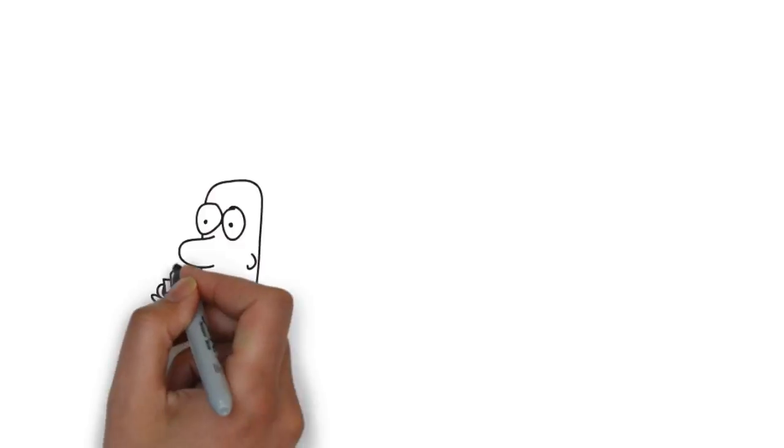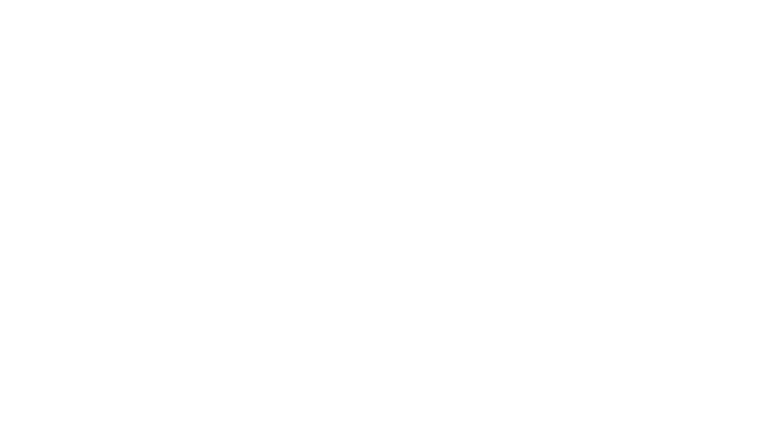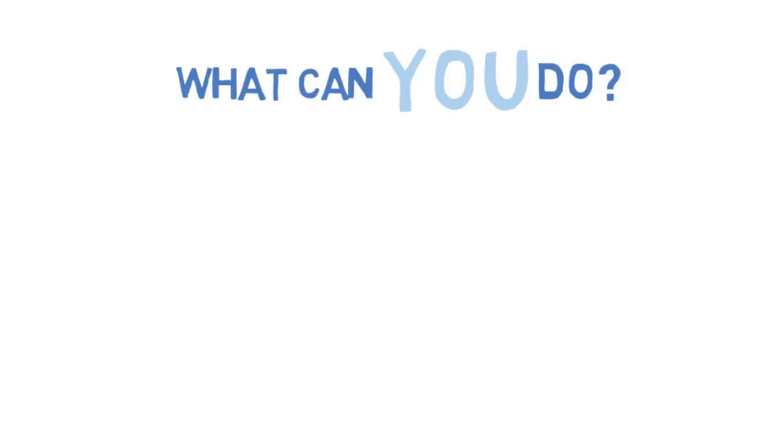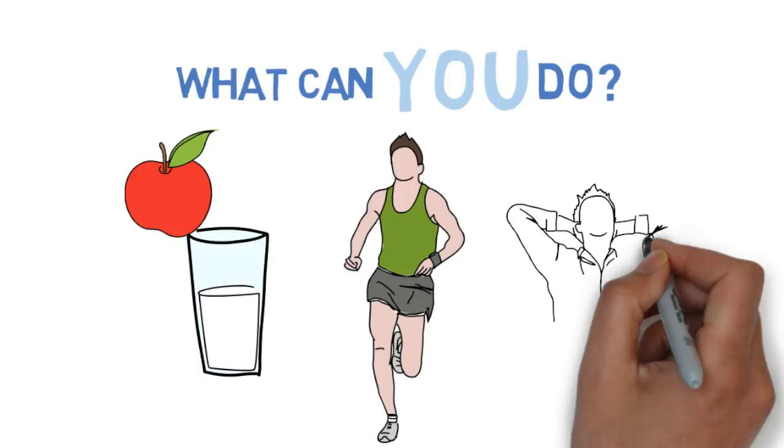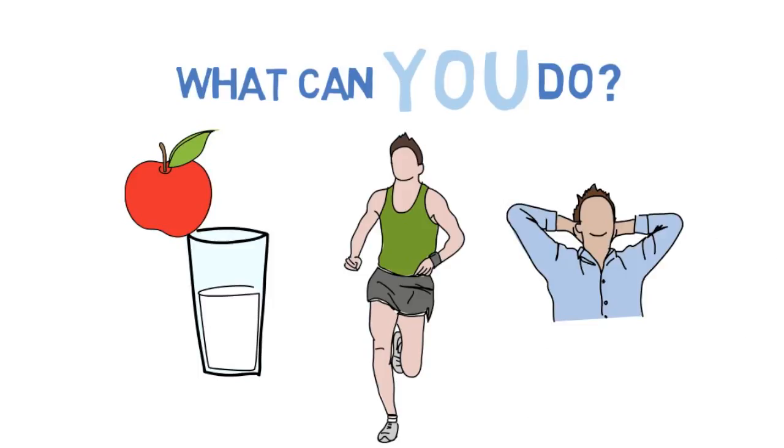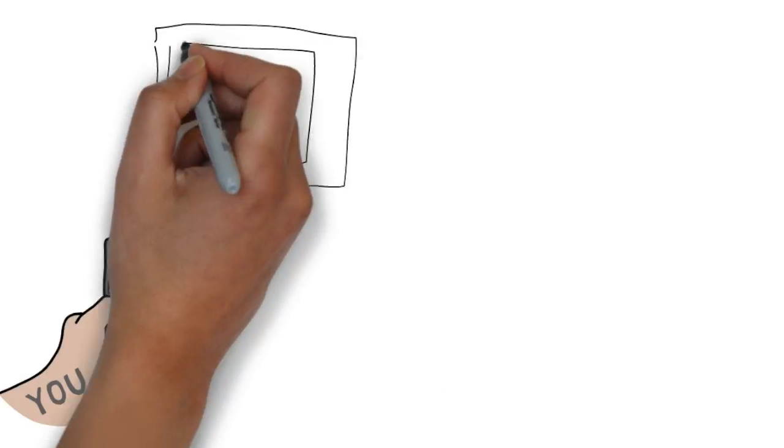You may be thinking, while scientists are doing all that, what can I do? Well, studies have shown that healthy diet, exercise, and relaxation can cause longer telomeres, thus possibly slowing biological aging. At the end of the day, you are in control of your health.